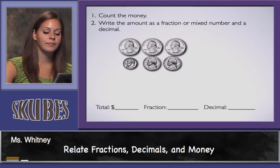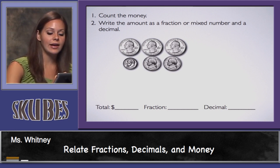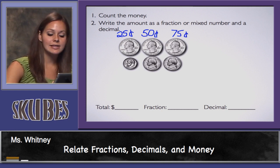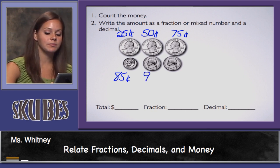I'm going to start by counting my quarters. I have three quarters. Each quarter is 25 cents. 25 cents plus another quarter I have 50 cents, plus another quarter I have 75 cents. I'll add my dime, which is 10 cents — now I have 85 cents — plus a nickel which is 5 cents, which brings me to 90 cents.